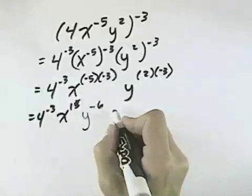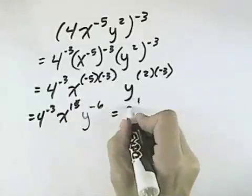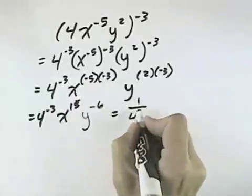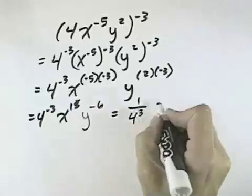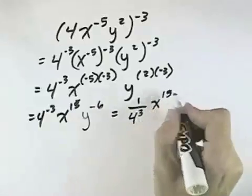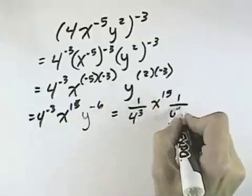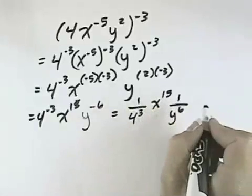Negative exponents mean 1 over, so this can be 1 over 4 to the third, x to the fifteenth — because that's positive — and 1 over y to the sixth.